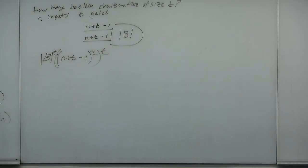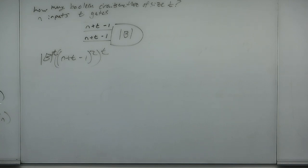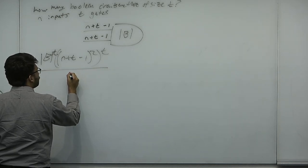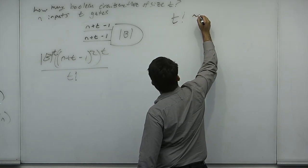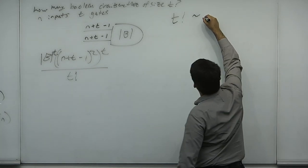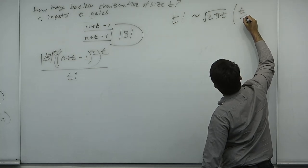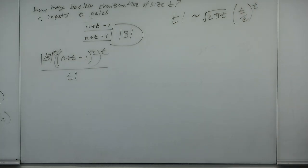We've significantly over-counted because we considered the circuit in a fixed ordering of gates, but a circuit is a topological object — it's up to permutations of the gates. We've over-counted by T factorial. Stirling's approximation gives T! ≈ √(2πT) · (T/e)^T, which is big-O of T^T.